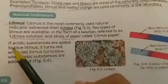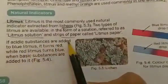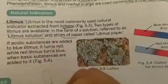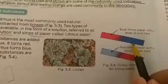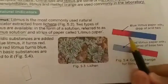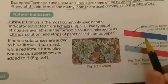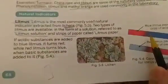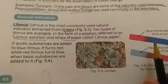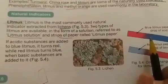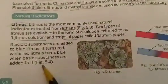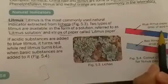If an acidic substance is added to blue litmus, it turns red. If I take a blue litmus paper and dip it in an acid, the portion that is dipped will change its color to red. So the blue litmus changing to red indicates that the given chemical is acidic.